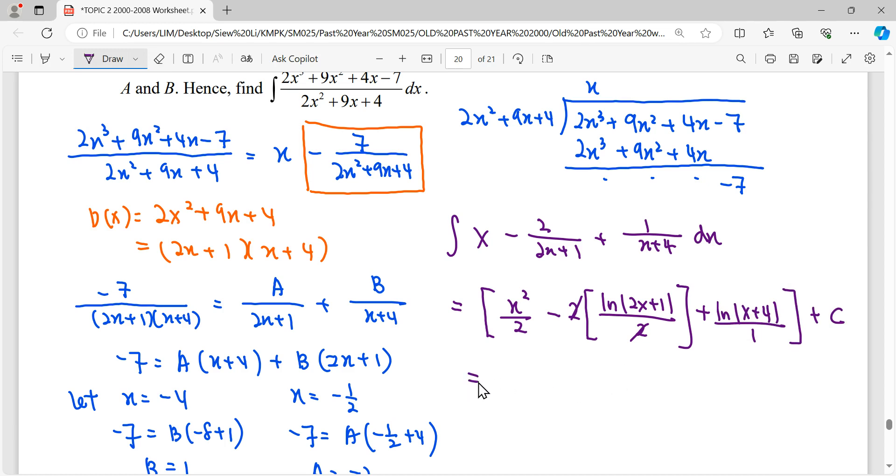So we simplify this, it will be x squared over 2 minus ln 2x plus 1 plus ln x plus 4 plus C. So if you want to simplify some more, ln minus ln.